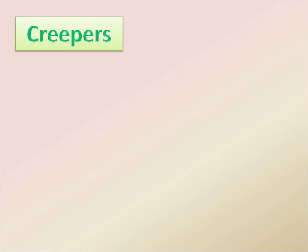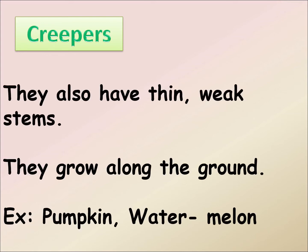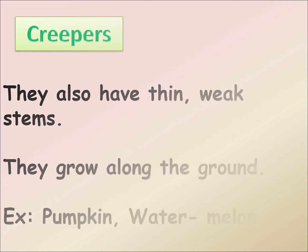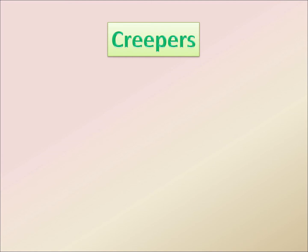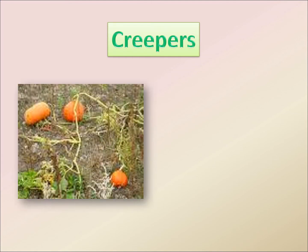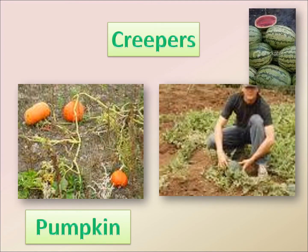Now comes the creeper. Creepers are also weak plants and they mostly grow along the ground. They usually bear big fruits like pumpkin, gourd, watermelon, and muskmelon. In this picture, you can see pumpkin and watermelon.